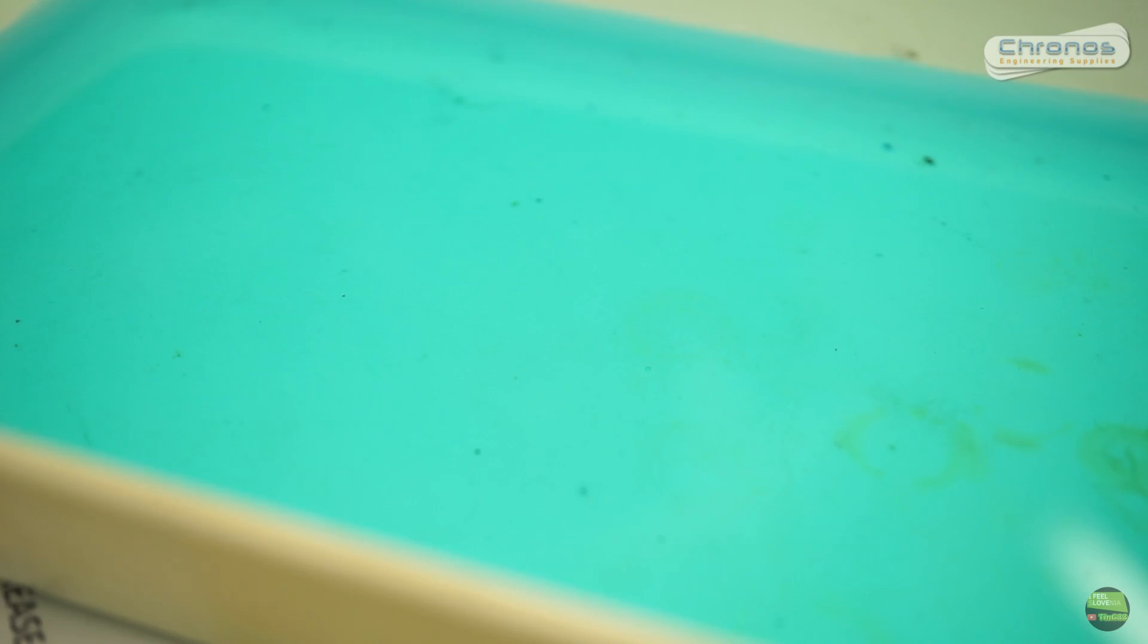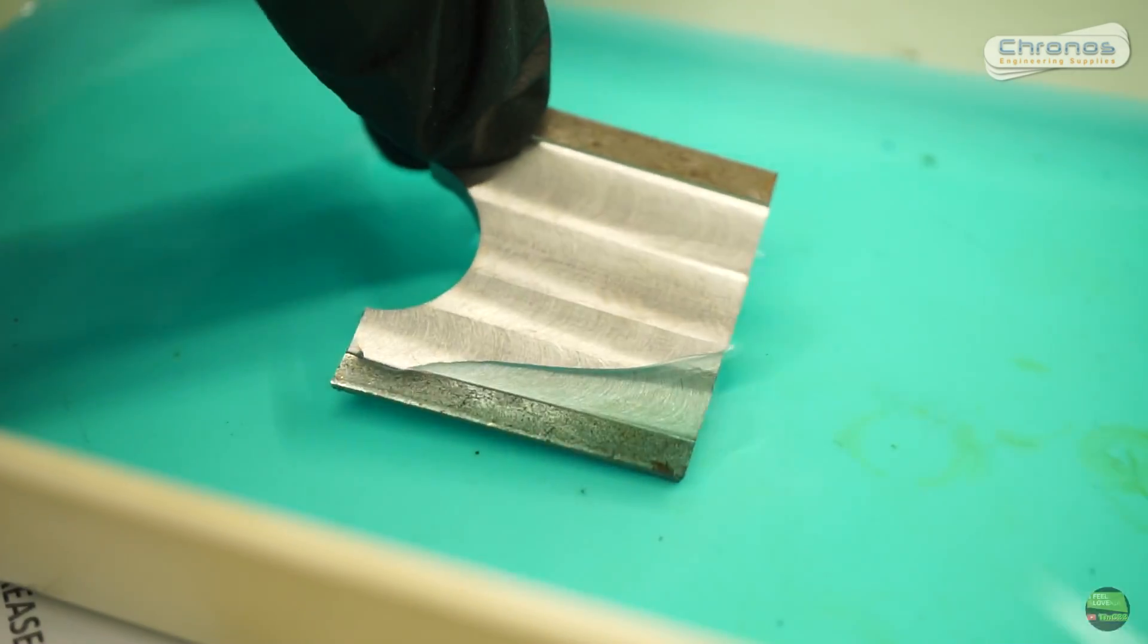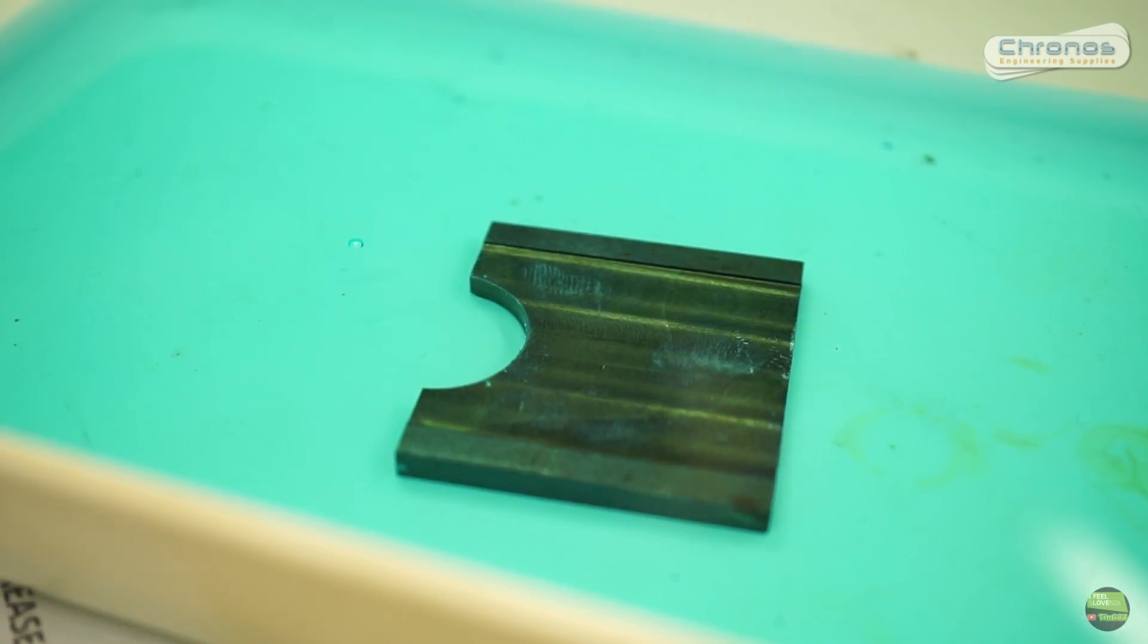Before we put steel into blackening solution, parts need to be clean. So there's no traces of grease, oil, rust or any other dirt to get the best result. But I want to try the difference. So that piece got one part of surface freshly milled, and the other part is covered with protective grease. And there's also a bit of rust.